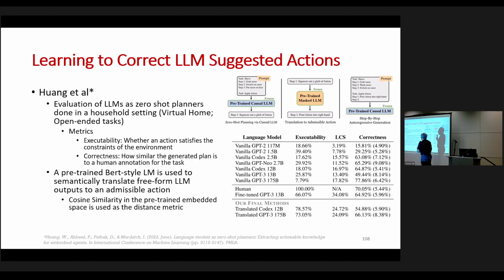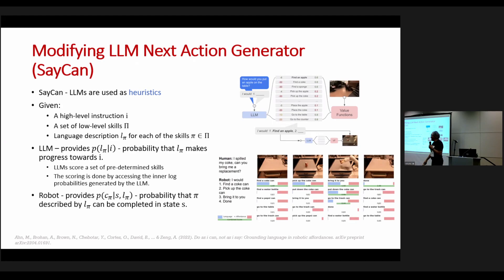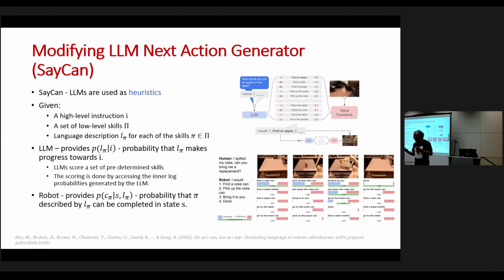One of the very first ideas that worked on this is SayCan from the Google team. They had logits information — knowing which actions were going to be predicted. OpenAI used to give that information but apparently no longer does. The Google team, working with the PaLM system, knew the top-k actions it was about to predict, then had an RL system that knew which actions were actually doable in the current scenario — so you pick one. It's like asking a friend for ideas and choosing which ones you can actually do.